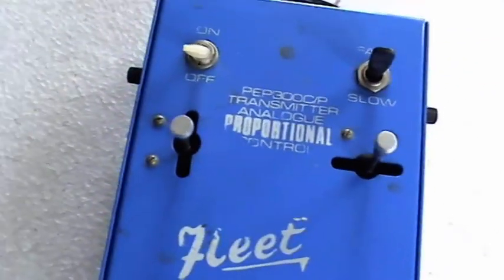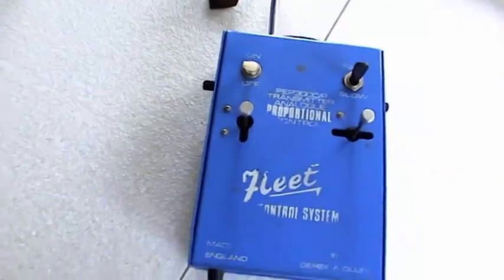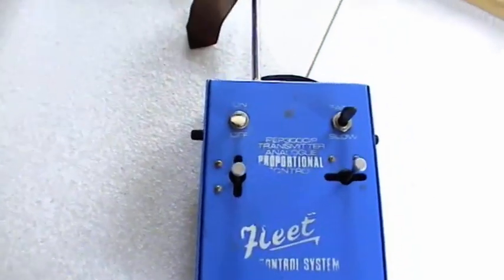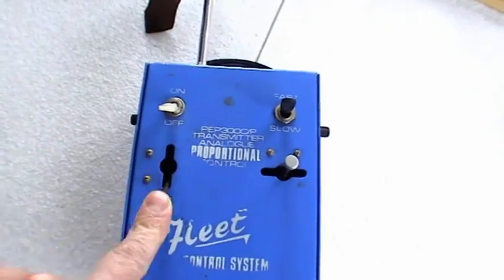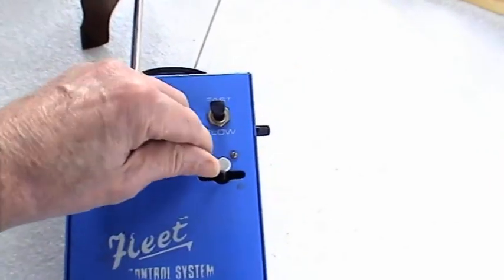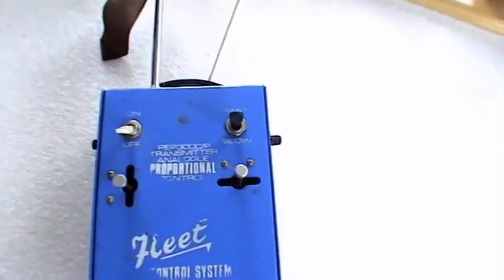There is just another example of an early British transmitter here. This was the Fleet. And Fleet made a number of variants of this. They went differently to a number of other manufacturers in the fact that they used two separate sticks. This was hoped that it would attract reed flyers.